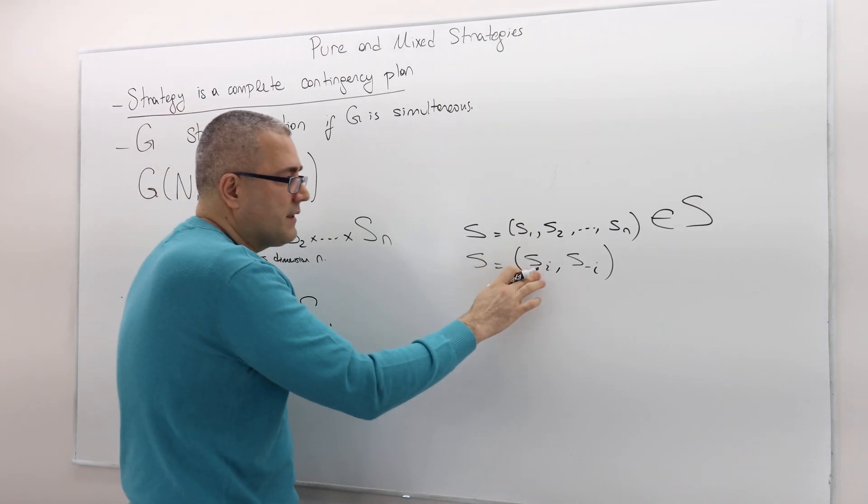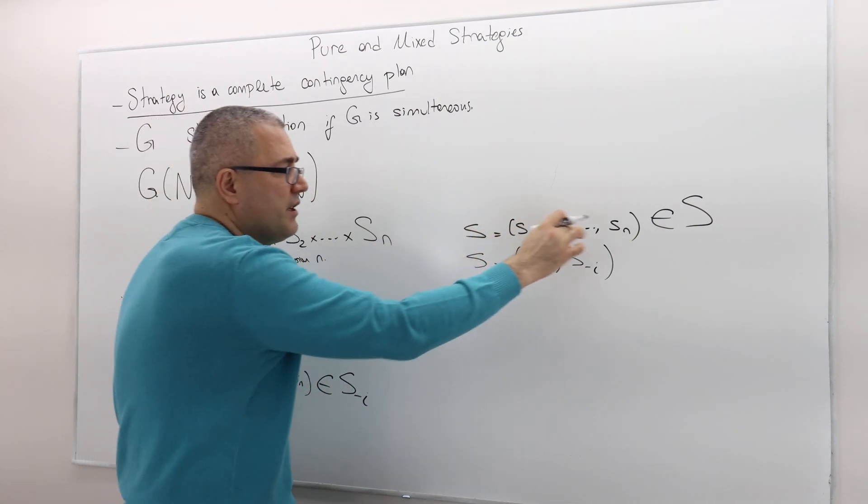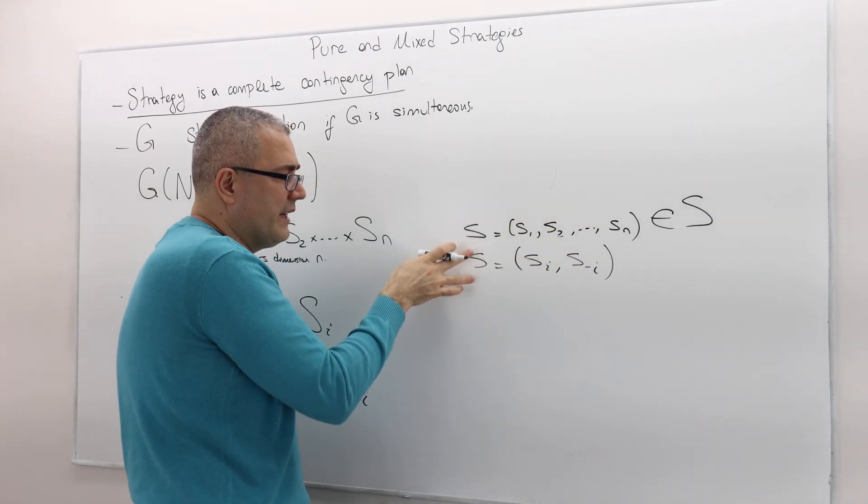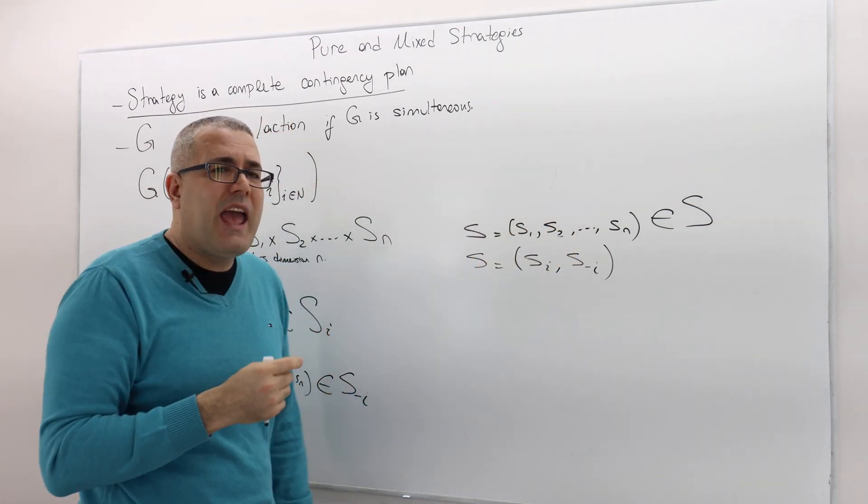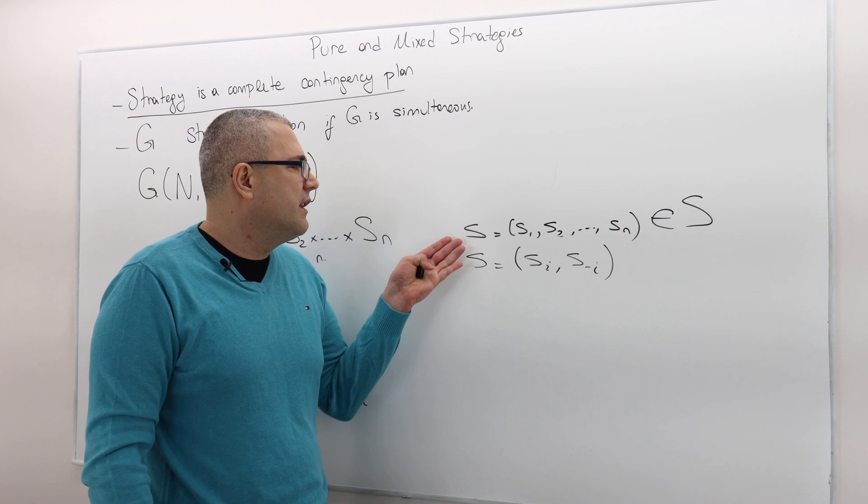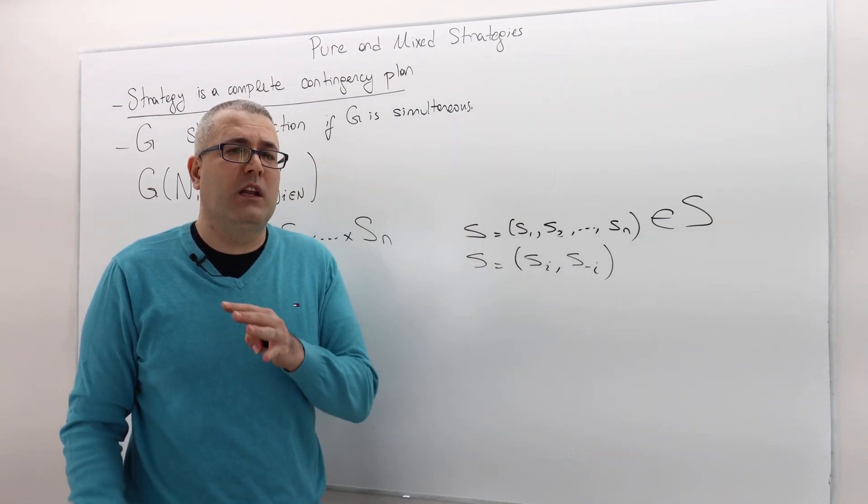Sometimes we want to say S is equal to S_I and S minus I. S_I is the player I's strategy in this vector.